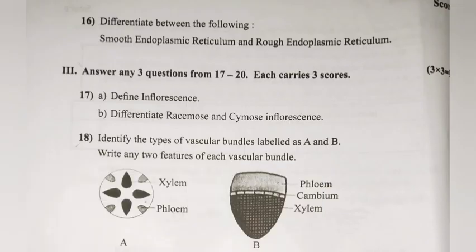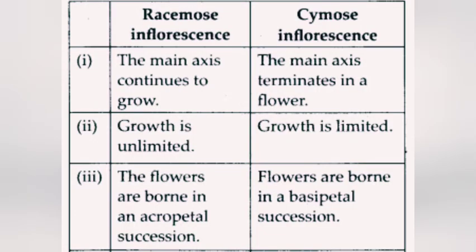Question 17 (A): Define inflorescence. Answer: The arrangement of flowers on the floral axis is known as inflorescence. (B) Differentiate racemose and cymose inflorescence. Answer — Racemose: the main axis continues to grow; growth is unlimited. Cymose: the main axis terminates in a flower; growth is limited.